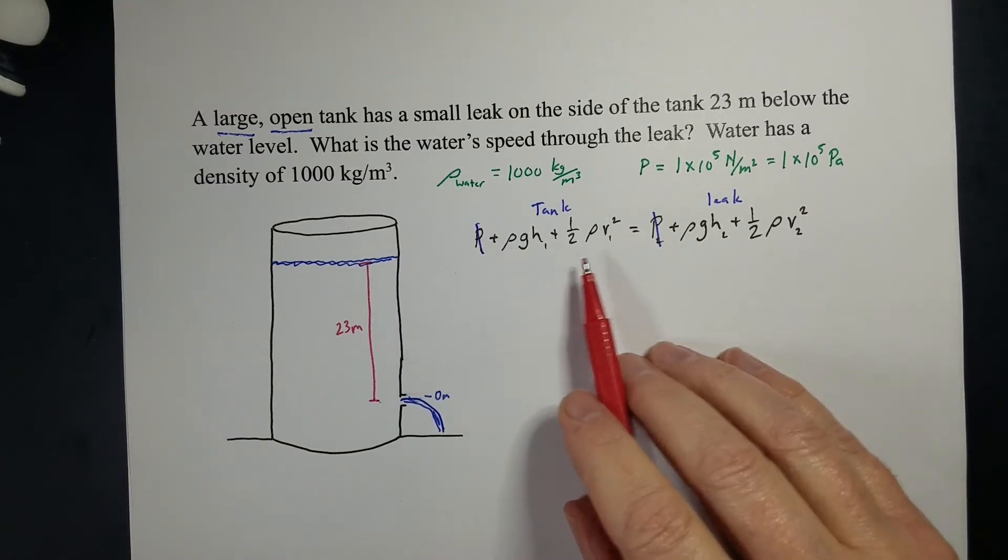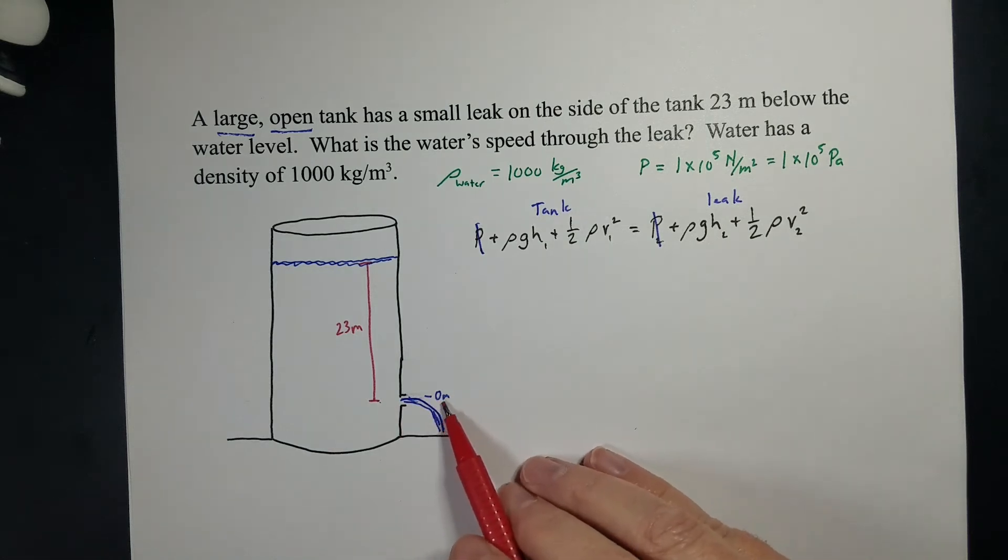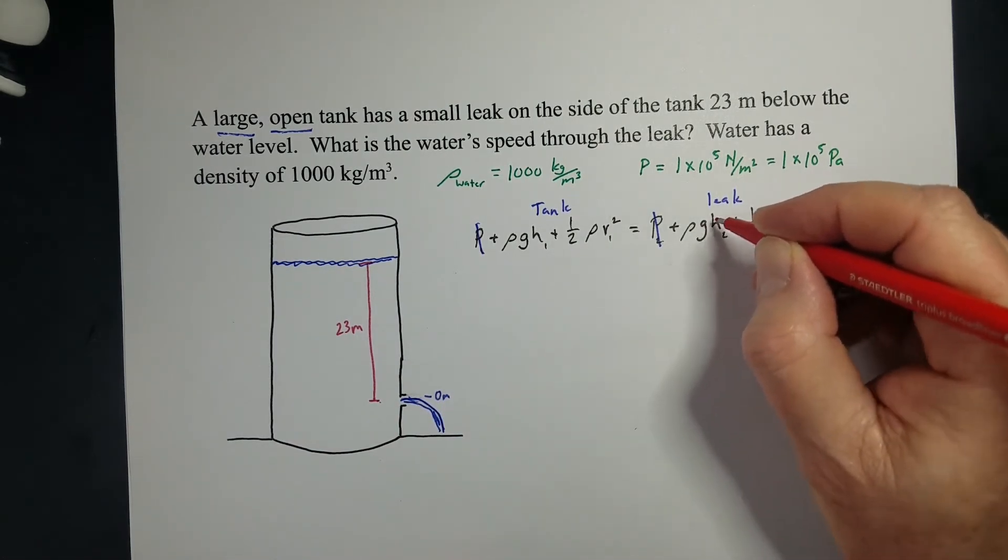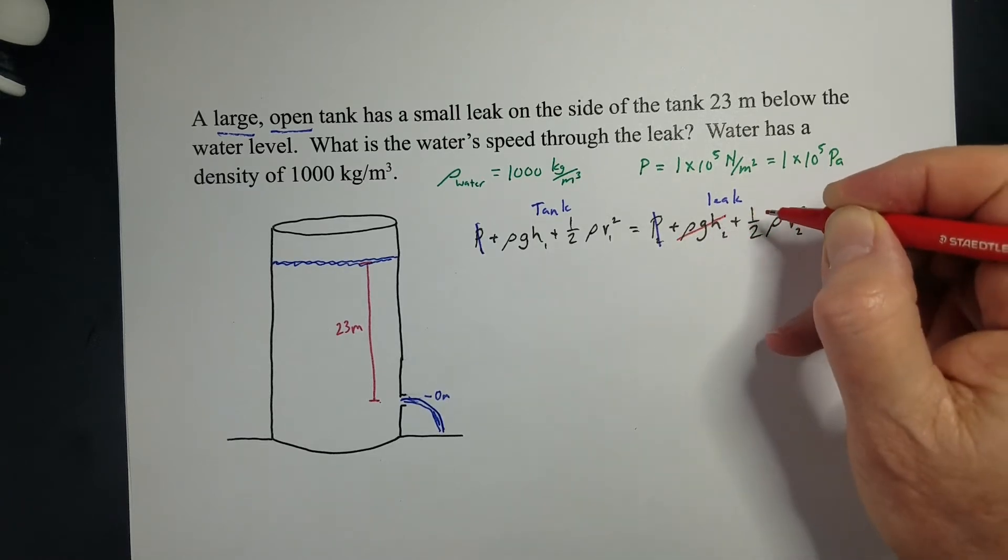Now, since the leak is where we define our 0 for the height, H is 0 here, so that term falls completely out. So it's gone.